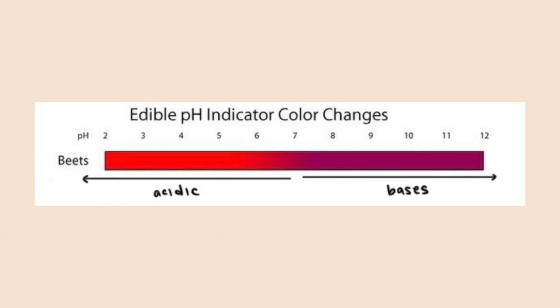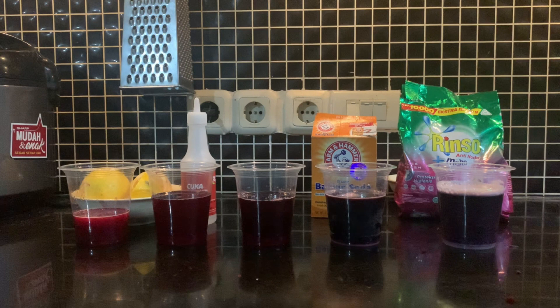Now it's time for the results. Before looking at the results, we need to look at this table first. This table says that if the solution turns red, that means it's acidic, and if it turns purple, then it's base. If we take a closer look, the lemon solution turns pink and the vinegar solution turns dark red — that tells us that lemon and vinegar are acids. Meanwhile, the mineral water stays at its original color, telling us that mineral water is a neutral solution. The baking soda solution and detergent solution turn a bit purple, telling us that baking soda and detergent are base solutions.